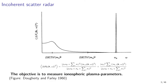Incoherent scatter radars measure radar echoes from ionospheric plasma. The power spectrum of these radar echoes is described by the theory for incoherent scatter of electromagnetic waves from plasma. This theory was derived in the early 1960s by several authors, including Donald Farley and Hagfors. The theory is very precise, and it allows us to determine the ionospheric plasma parameters from a radar measurement. Observing ionospheric plasma parameters is therefore the primary objective of incoherent scatter radar measurements, and the technique is often the best method for observing these parameters using a ground-based instrument.